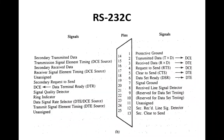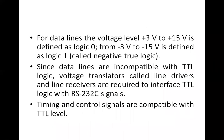For data lines, the voltage level from +3 V to +15 V is defined as logic 0, and from −3 V to −15 V is defined as logic 1. Normally the voltage levels are ±12 V. This convention — where positive voltage represents logic 0 and negative voltage represents logic 1 — is known as negative true logic.